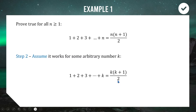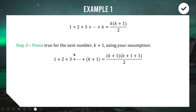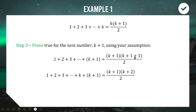Step 3 is where we use this assumption to show that the expression works for the next number along, when n equals k+1. We need to prove true for n = k+1 using our assumption. The left-hand side now sums up to k+1, and on the right we replace n with k+1, giving (k+1) times (k+2) divided by 2.